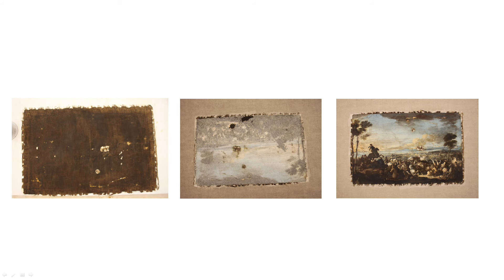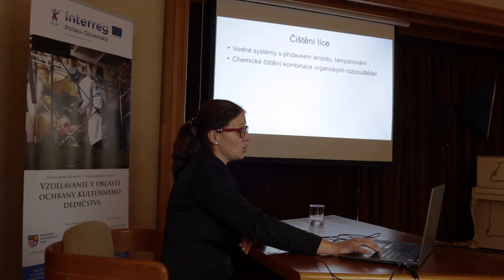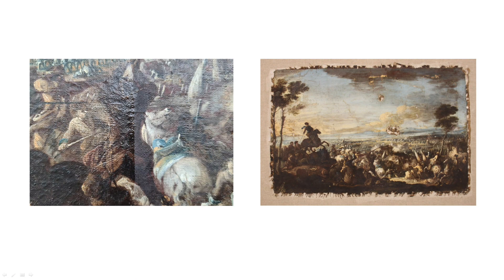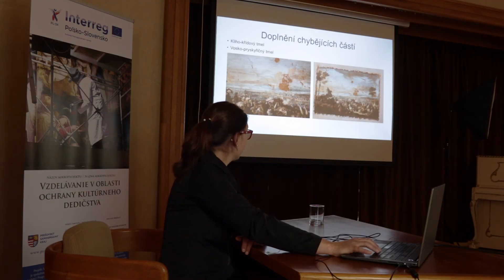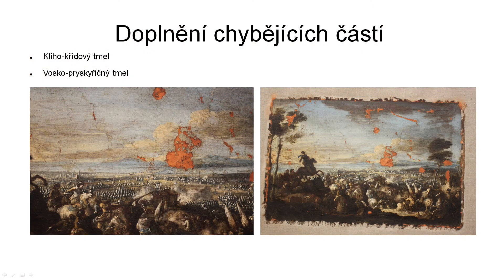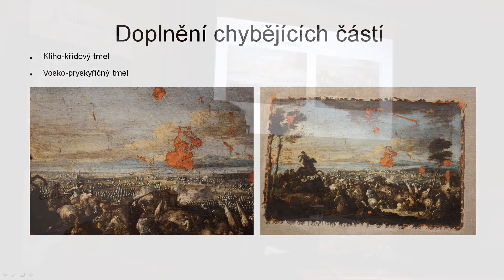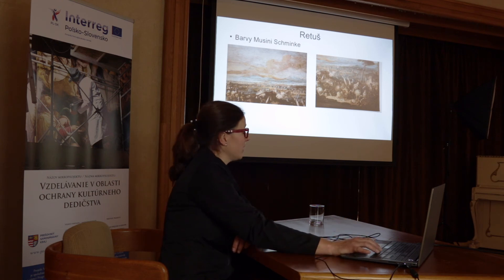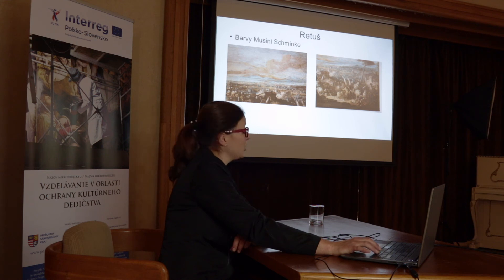Pak, když bylo dílo zpevněné a podlepené, bylo možné pokračovat dál metodami čištění. Tady vidíte průběh čištění toho díla – na detailu vidíte jednoznačný rozdíl. Bylo nutné doplnit chybějící části, takže se udělal speciální tmel. Jiný tmel byl použit v centru malby, jiný tmel na obvodu. Je to z toho důvodu, že při obvodu je malba neustále namáhaná tlakem a klasický klihokřídový tmel je poměrně křehký. Takže tam se použil voskopryskyřičný tmel, aby byl pružnější, a v plochách malby klihokřídový, aby se respektovala technika.